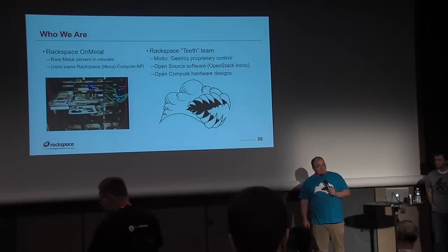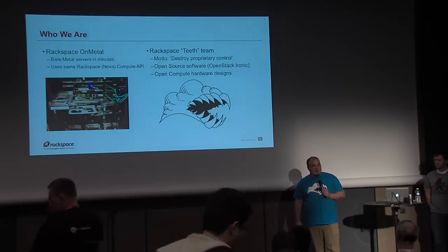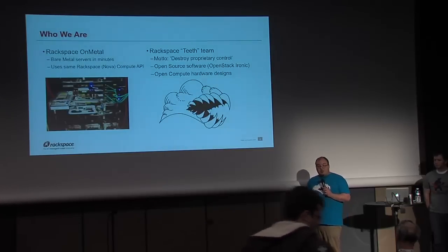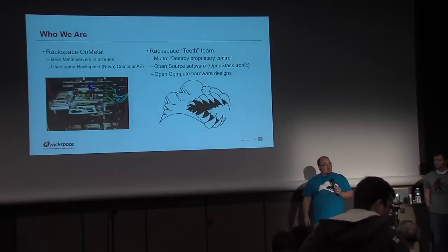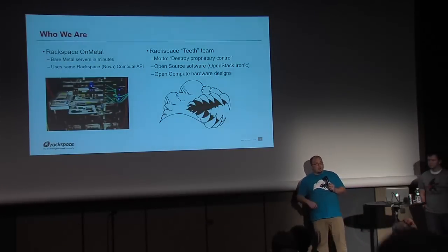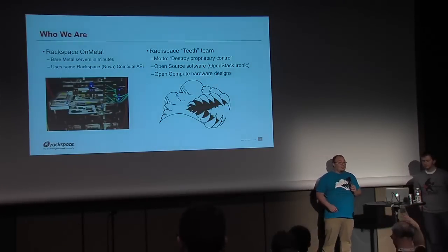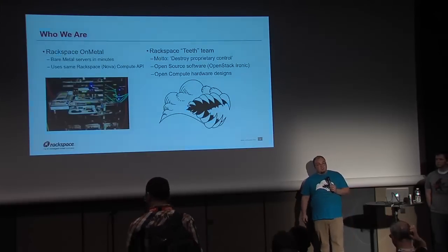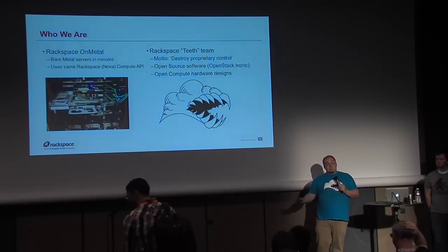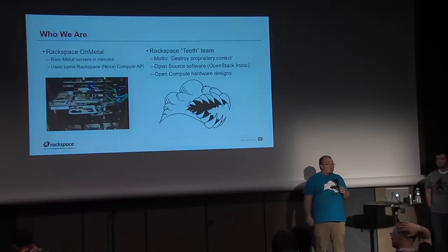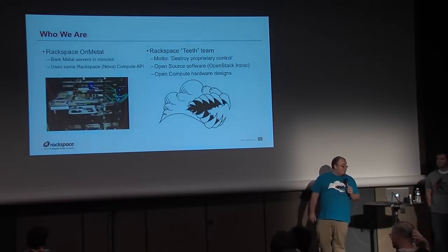It's built on top of OpenStack Ironic, and it integrates Ironic with our public cloud. So if you're a Rackspace customer, you can call our API — the exact same one you would to get a virtual machine — use a different flavor, and instead you get a piece of hardware provisioned to you in minutes.